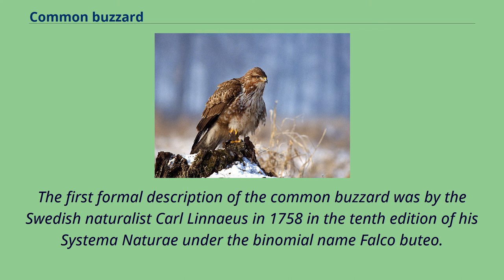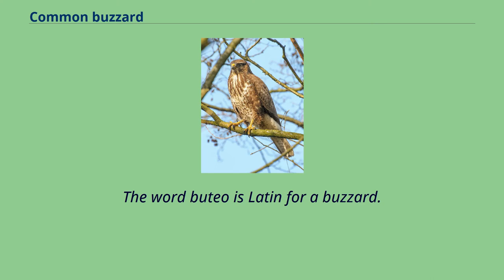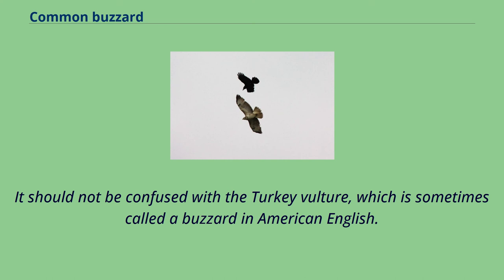The genus Buteo was introduced by the French naturalist Bernard Germain de La Cepède in 1799 by tautonomy with the specific name of this species. The word Buteo is Latin for a buzzard. It should not be confused with the turkey vulture, which is sometimes called a buzzard in American English.